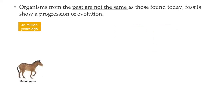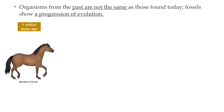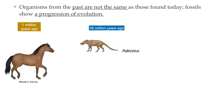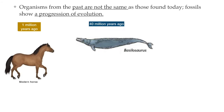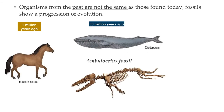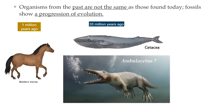Another thing that the fossil record can show us is the progression as organisms change over time. Of course, there is some extrapolation as to what the organisms to which the fossils belong looked like. For example, this is the fossil of a whale ancestor called Ambulocetus, and this is an artist's rendering of what Ambulocetus might have looked like based on its fossil. Our look at the fossil record, although incomplete, provides a picture of how organisms alive today may have evolved, and as more fossils are discovered, this picture becomes clearer.